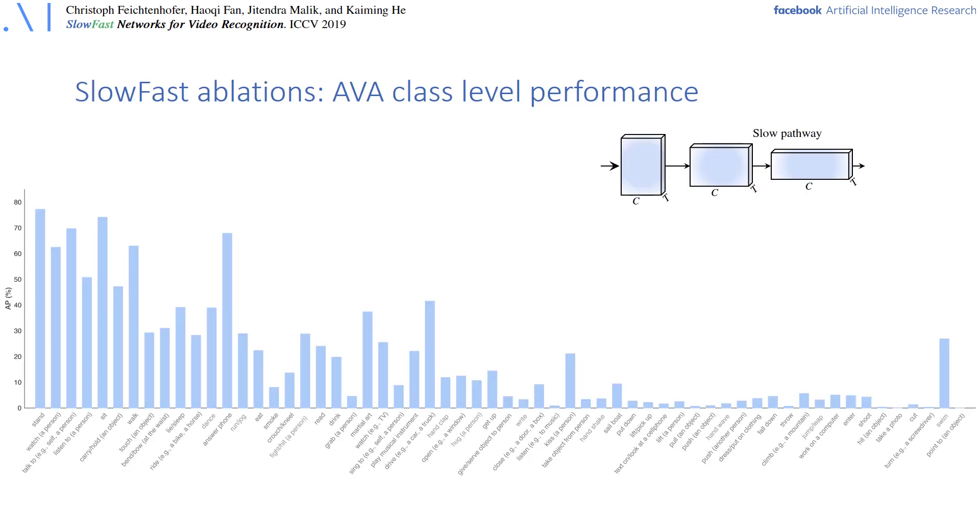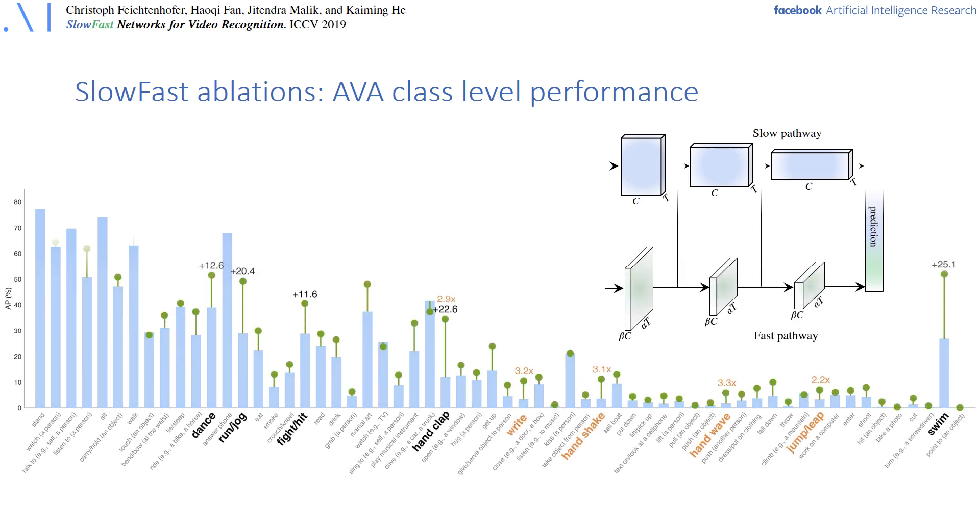The model can perform state-of-the-art on multiple datasets for action classification and detection. For action detection we here look at the AVA dataset and some class level performance. Adding the fast pathway here of the SlowFast model over the slow model shows that especially for high dynamic action classes such as dancing, running, fighting or hand clapping, we can observe a substantial boost in average precision here.